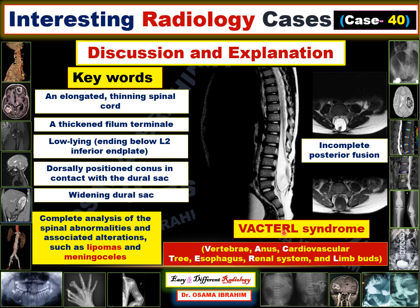TE represents tracheoesophageal fistula, which is also associated with VACTERL syndrome and vertebral dysraphism. R should be excluded by ultrasound to rule out any renal abnormalities or congenital renal disease such as renal agenesis, ectopic kidney, or duplicated kidneys — all should be excluded or confirmed. The last letter L represents limb abnormalities, which should also be excluded.